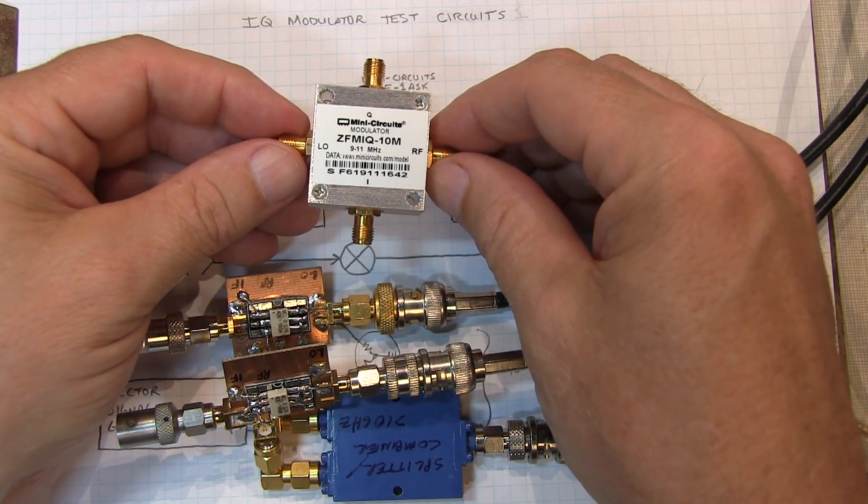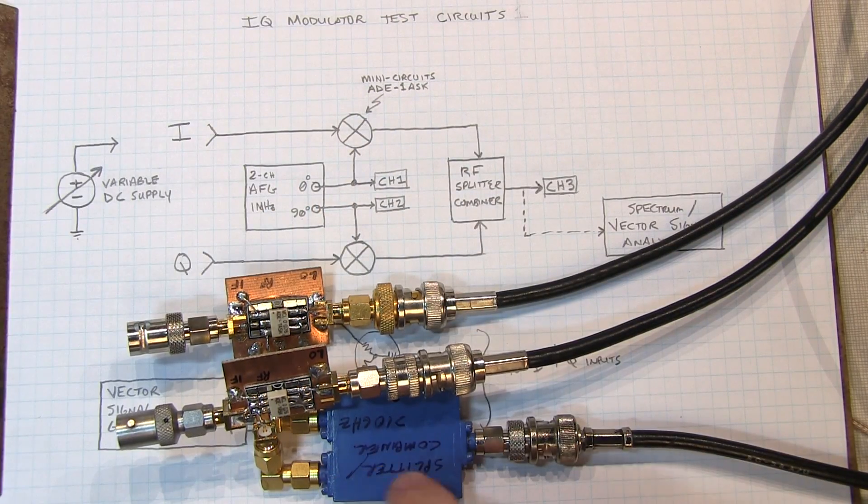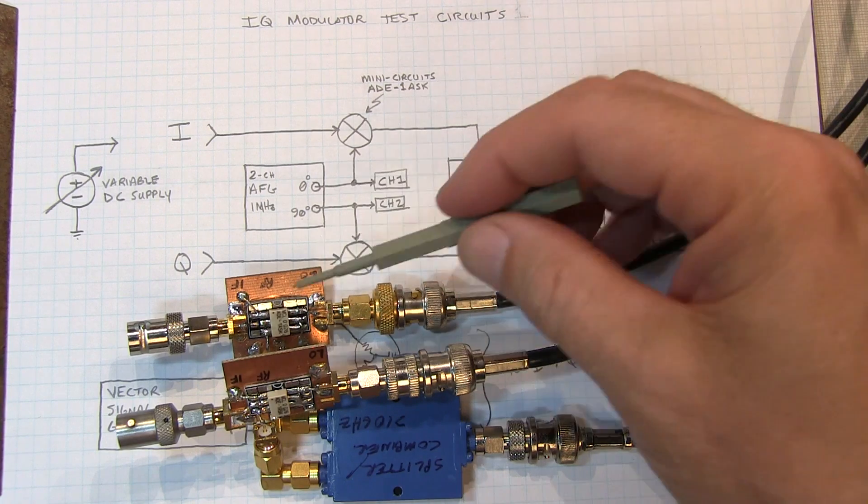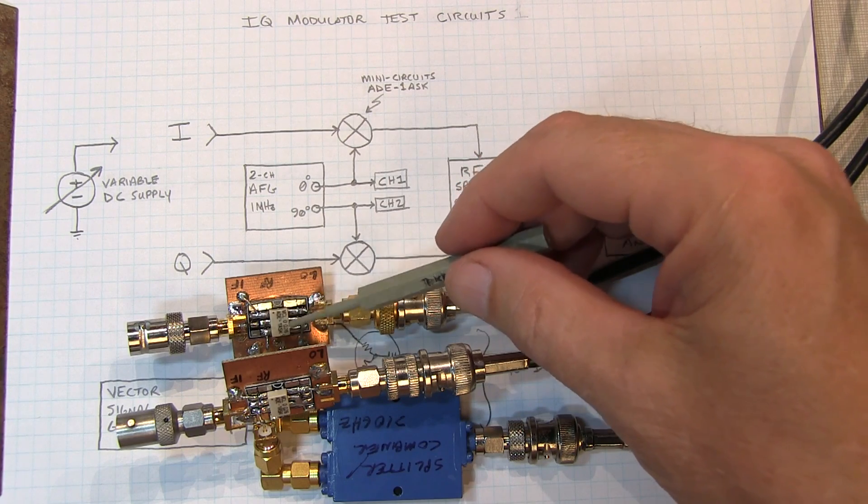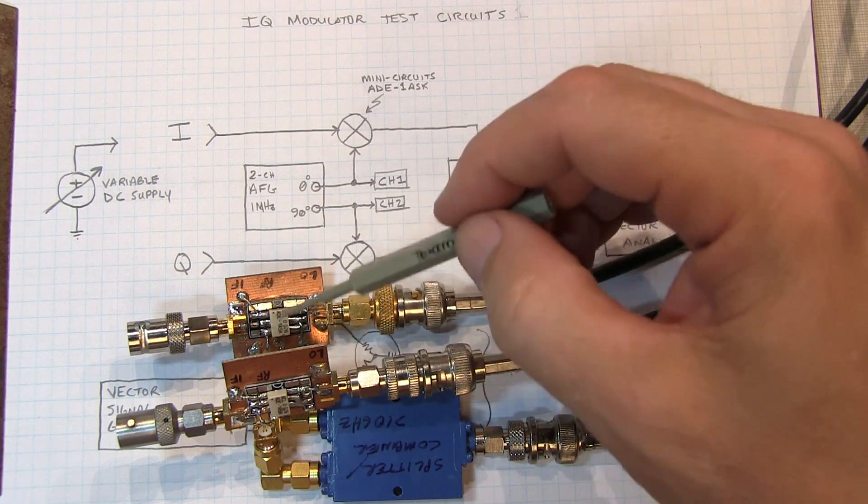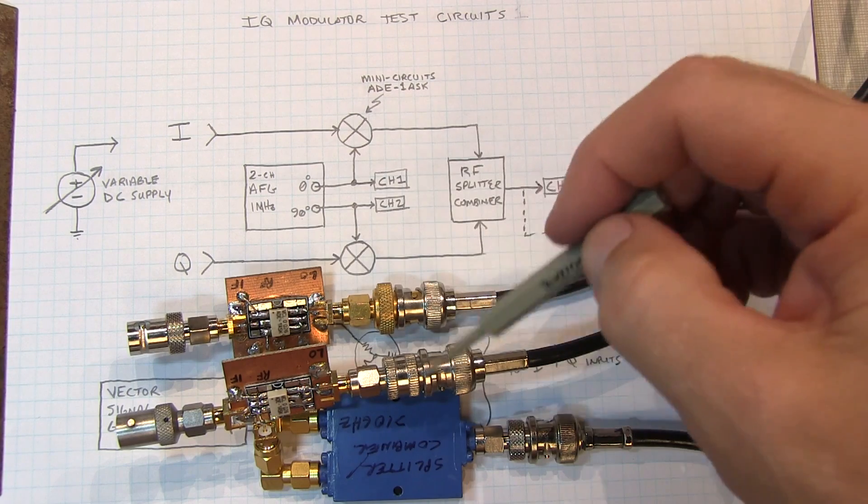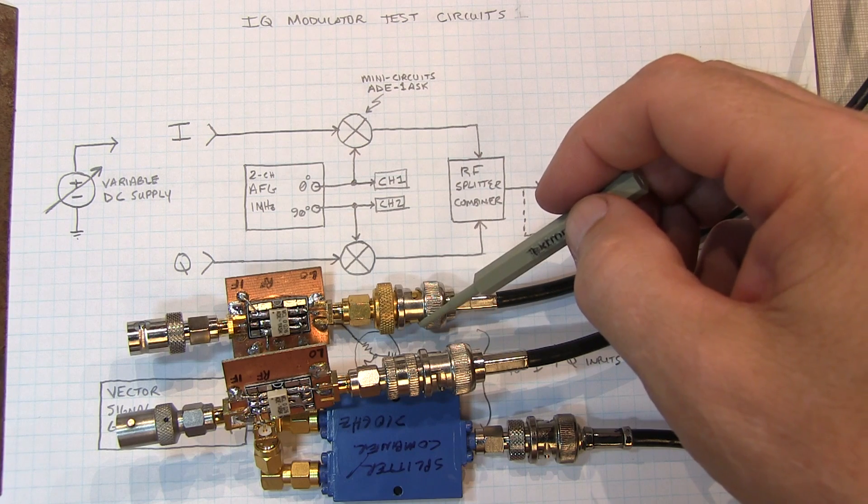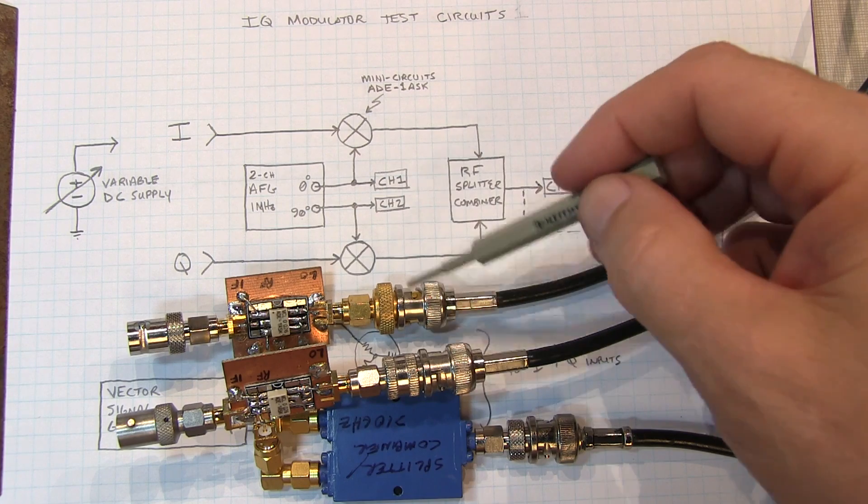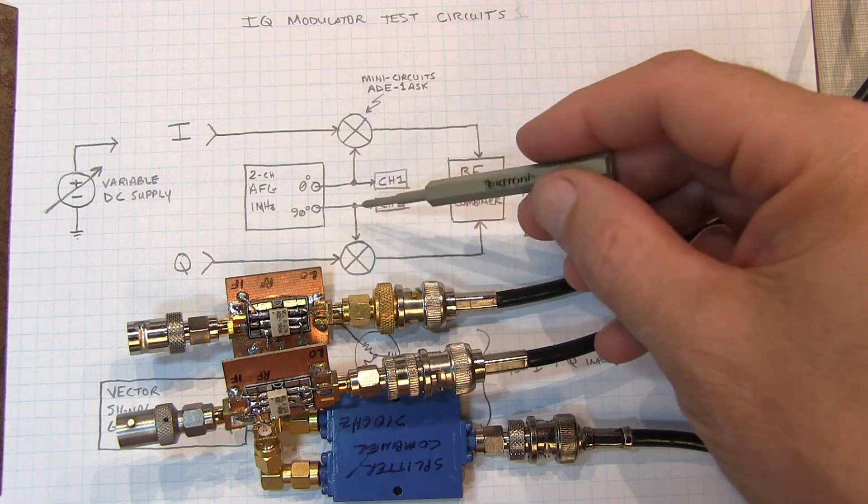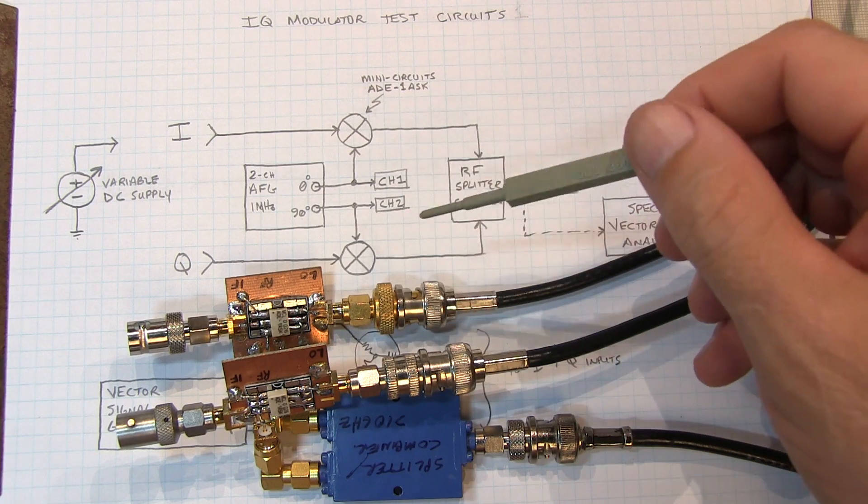In order to demonstrate the operating principles of the IQ modulator, rather than use this pre-built one, we'll use this one that I put together here with some basic components. I've got a pair of diode ring mixers. These are ADE-1ASKs from Mini Circuits. So they're right here and here. I'm driving the LO inputs of those mixers through a pair of connectors here that are going to a two-channel function generator that allows me to generate sine waves that are in quadrature.